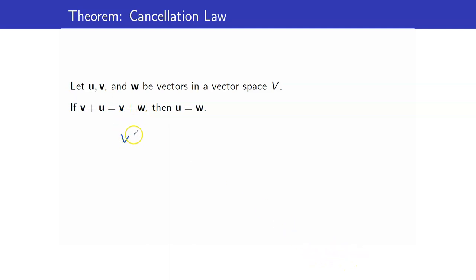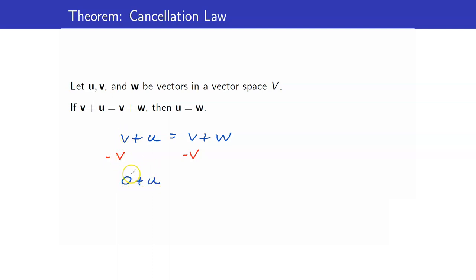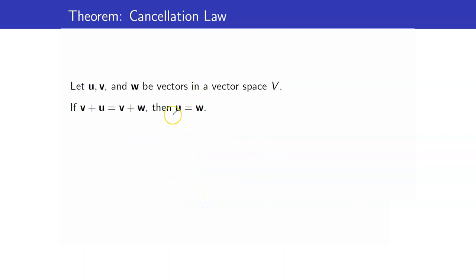Why can we do that? Suppose that v plus u is equal to v plus w. Because of the existence of the additive inverse, for v there exists an additive inverse, negative v. So I will add negative v on both sides, and therefore v plus negative v equals the 0 vector. So I have 0 plus u — note that this is the 0 vector, to differentiate it from the 0 real number — equals 0 plus w. Since 0 plus u is u, and 0 plus w is w, these two are the same.